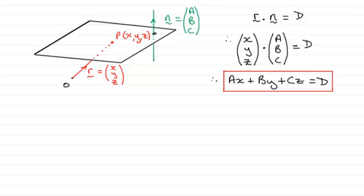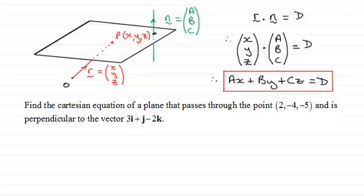Now here's an example that picks up on this concept. We've got to find the Cartesian equation of a plane that passes through the point (2, -4, -5) and is perpendicular to the vector 3i plus j minus 2k.